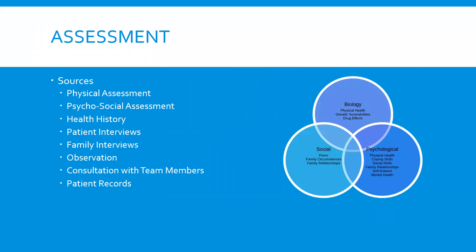When we do our assessment in psychiatric nursing, we pull our assessment from multiple sources. This may be from a physical assessment, a psychosocial assessment, a health history, interviewing the patient, interviewing the patient's family or friends, using our own observation of how the patient acts and behaves within a certain environment, consultation with other members of the patient's health care team both at your facility and outside, and also looking at patient records.